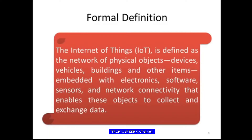The Internet of Things is defined as the network of physical objects — that can be devices, vehicles, buildings, and other items — which have embedded electronics, software, sensors, and network connectivity that enable these objects to collect and exchange data. This is the formal definition.